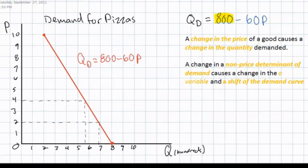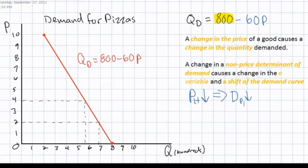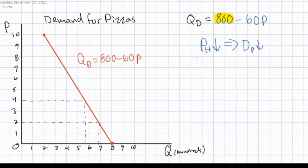Let's do an example. A close substitute for pizzas is hamburgers. If the price of hamburgers decreases, we would assume that the demand for pizzas would decrease. Therefore the A variable in our demand for pizza equation will decrease. With a fall in the price of a substitute good, the demand for pizzas will decrease and this will cause a decrease in the A variable.